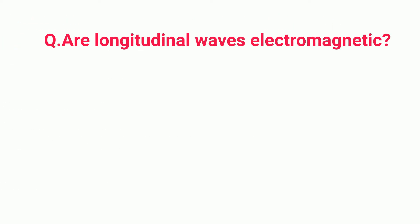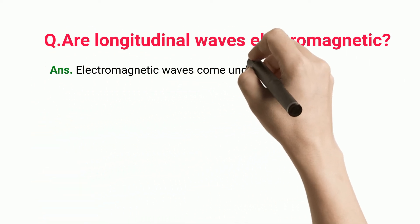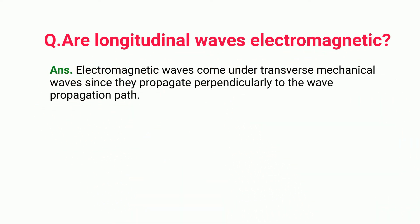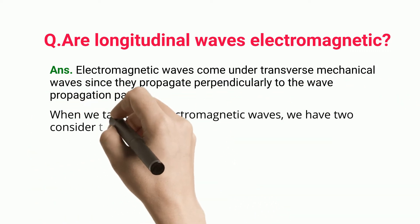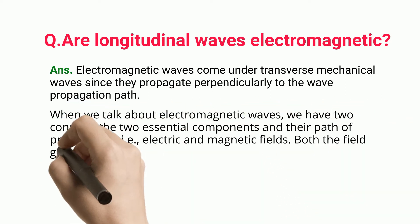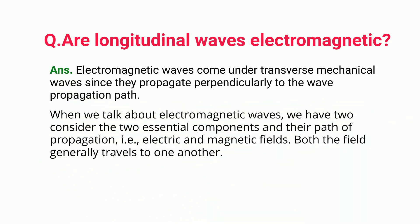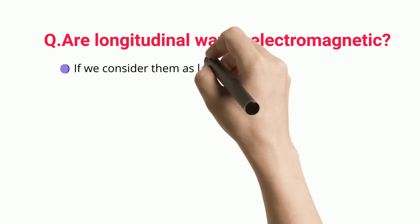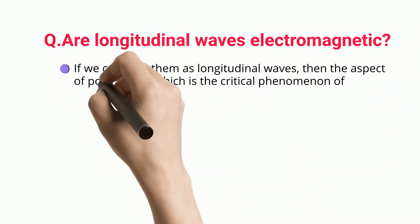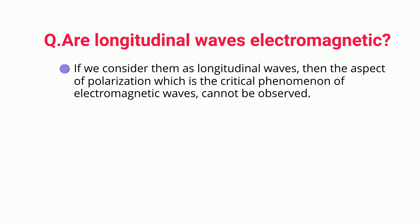Are longitudinal waves electromagnetic? Electromagnetic waves come under transverse mechanical waves since they propagate perpendicularly to the wave propagation path. When we talk about electromagnetic waves, we have to consider the two essential components and their path of propagation, i.e., electric and magnetic fields. Both fields generally travel perpendicular to one another. If we consider them as longitudinal waves, then the aspect of polarization, which is the critical phenomenon of electromagnetic waves, cannot be observed.